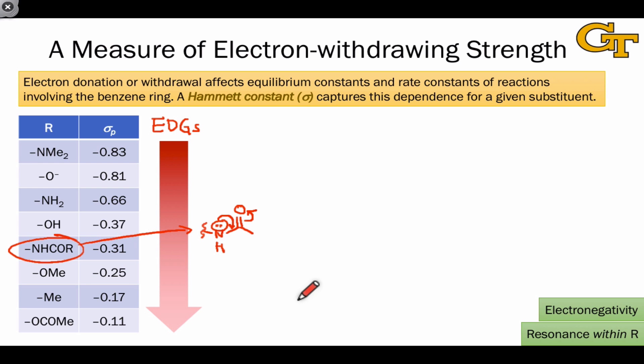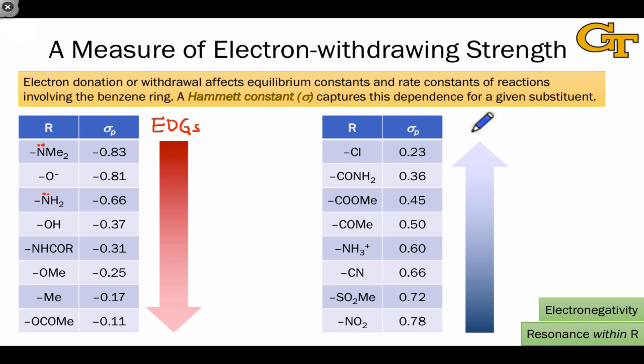And so this nitrogen is not as strongly donating as a nitrogen that lacks that additional withdrawing group, such as the nitrogen in Nme2 or in NH2. We see the same effect happening for oxygen, in fact, with OME being a stronger electron donor than OCOME, which is an ester containing a carbonyl group that's tugging on the oxygen's lone pair, pulling it away from the aromatic pi system.